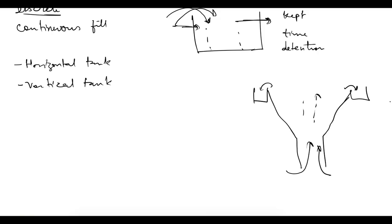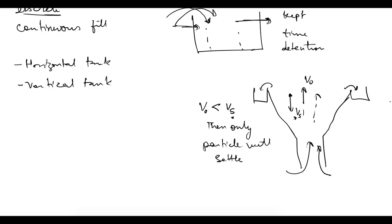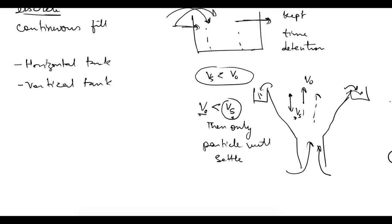As the water moves upward with velocity V₀, the velocity of settlement of particles is Vs downward due to gravity. In a vertical tank, the upward flow velocity must be less than the velocity of settlement for particles to settle. Particles with settling velocity less than V₀ will simply flow out with the water and not settle. In the horizontal tank, the theory is different.